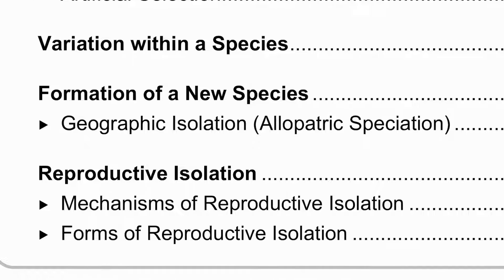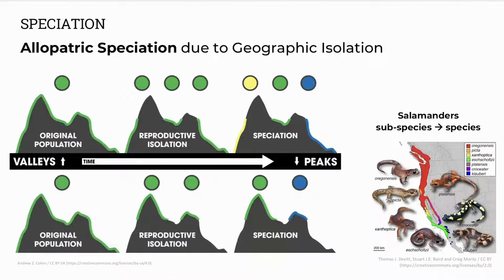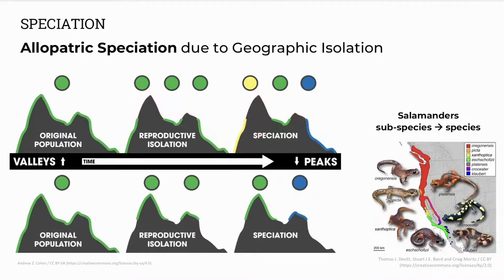Then we have a look at formation of new species. Species may be formed, for example, by geographic isolation. So species may be separated geographically — mountain peaks may form barriers between different groups and we may eventually get new species forming. It could be valleys, bodies of water, deserts, or mountains. If these populations don't meet, they don't mate, they become separate.